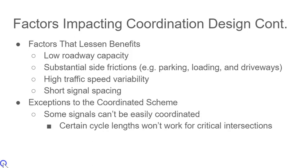Engineers involved with coordinated traffic signal design will need to consider factors that lessen the benefits of their design. These might include low roadway capacity, substantial side friction such as parking, loading, and driveways, high traffic speed variability, and short signal spacing. Finally, an engineer needs to consider whether a given intersection will work well with a certain coordinated traffic signal design. Given the variability of roadways and intersections, certain cycle lengths may be inappropriate or even counterproductive.